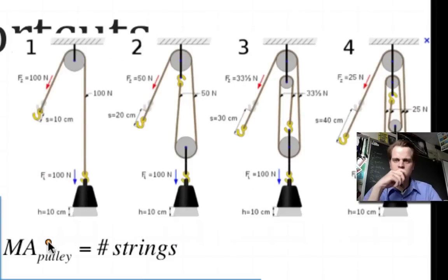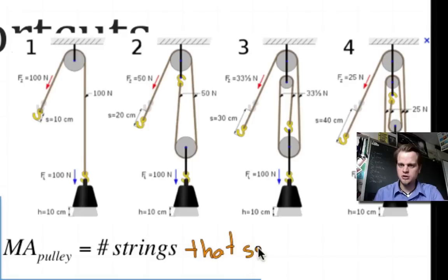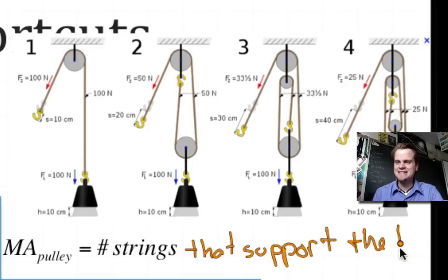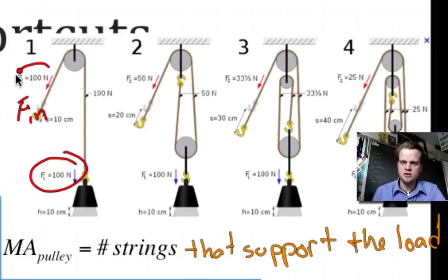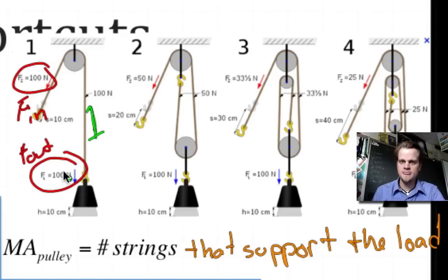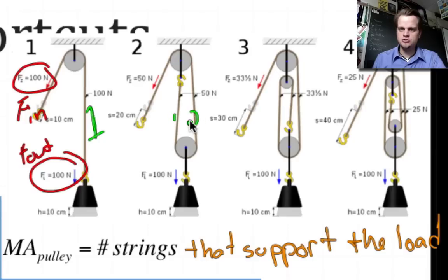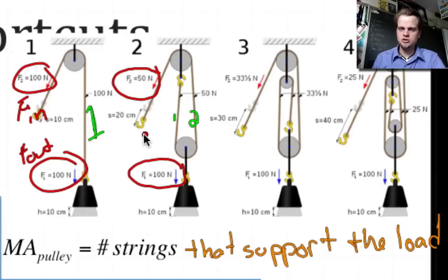For a pulley, the shortcut is the number of strings that support the load. A fixed pulley has one string supporting the load: 100 newtons in, 100 newtons out — mechanical advantage of one. With a movable pulley, you have two strings supporting the load, so your output force is 100 newtons but you only need to put in 50 newtons. That's 100 divided by 50, giving a mechanical advantage of two.